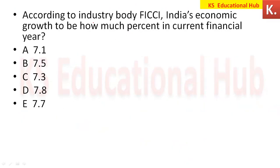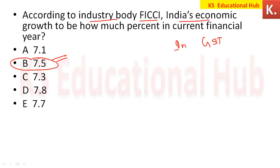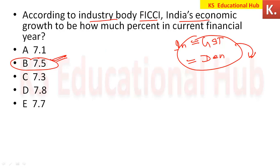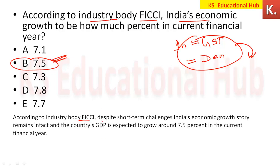According to industry body FICCI, India's economic growth in the current financial year is 7.5%. FICCI has stated that despite short-term challenges like GST and demonetization, India's economic growth story remains intact, and the country's GDP is expected to grow around 7.5% in the current financial year.